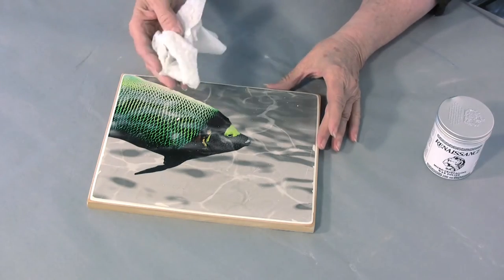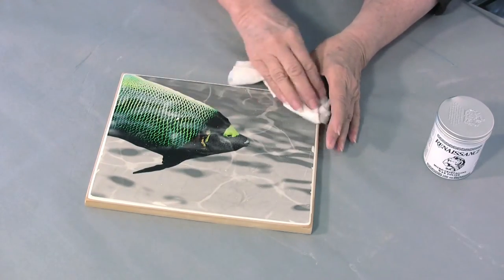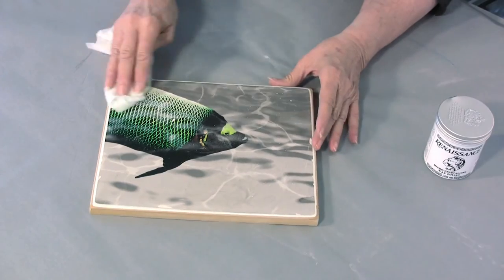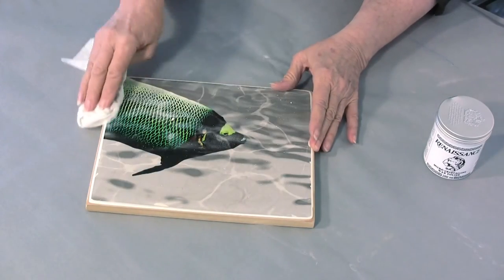After you're done sanding take a cloth and dust the surface really well because the next step is going to be to wax it to seal it.